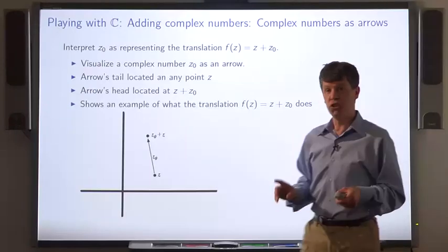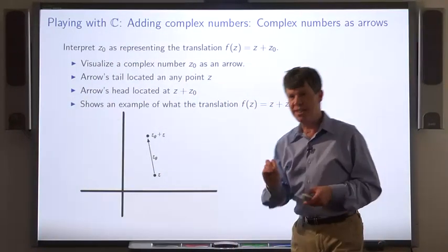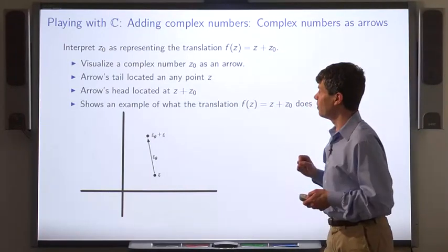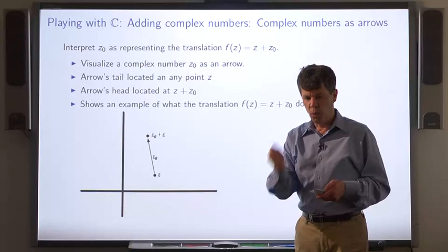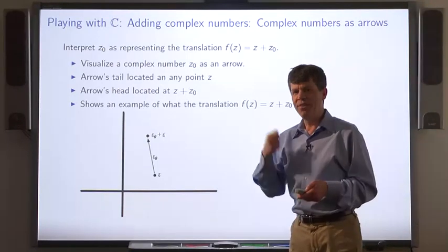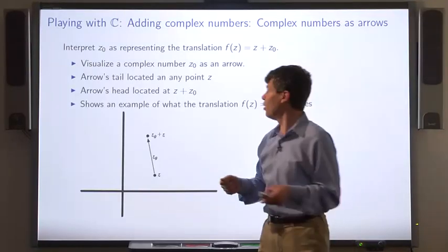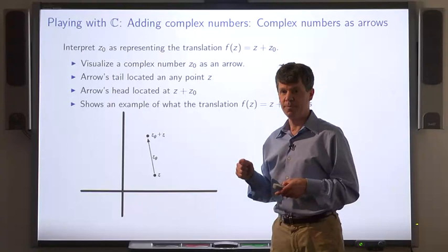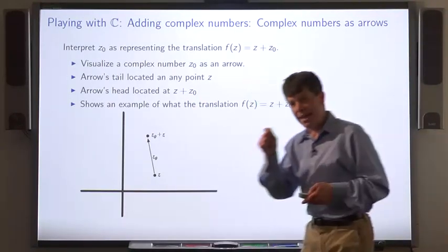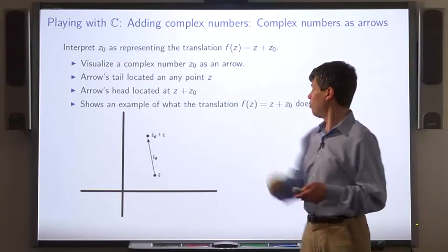So we can interpret the complex number z0 as representing the translation that adds z0 to the input. Once we interpret a complex number as a translation, we can think of it as an arrow in the complex plane. The arrow's tail can be located at any point z. Then the arrow's head is located at z plus z0. So the arrow shows an example of how the translation acts on a point.